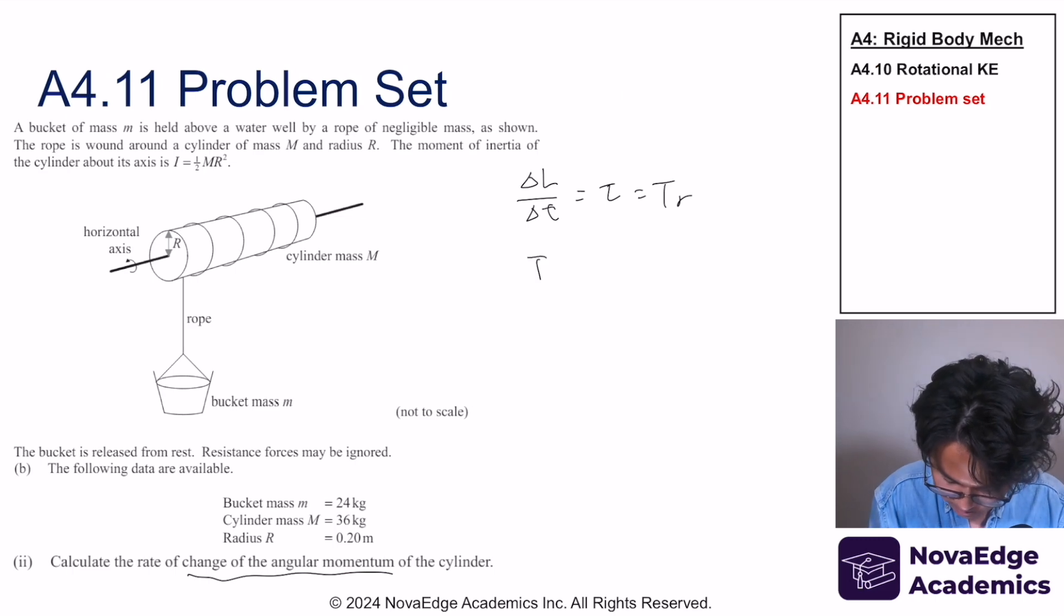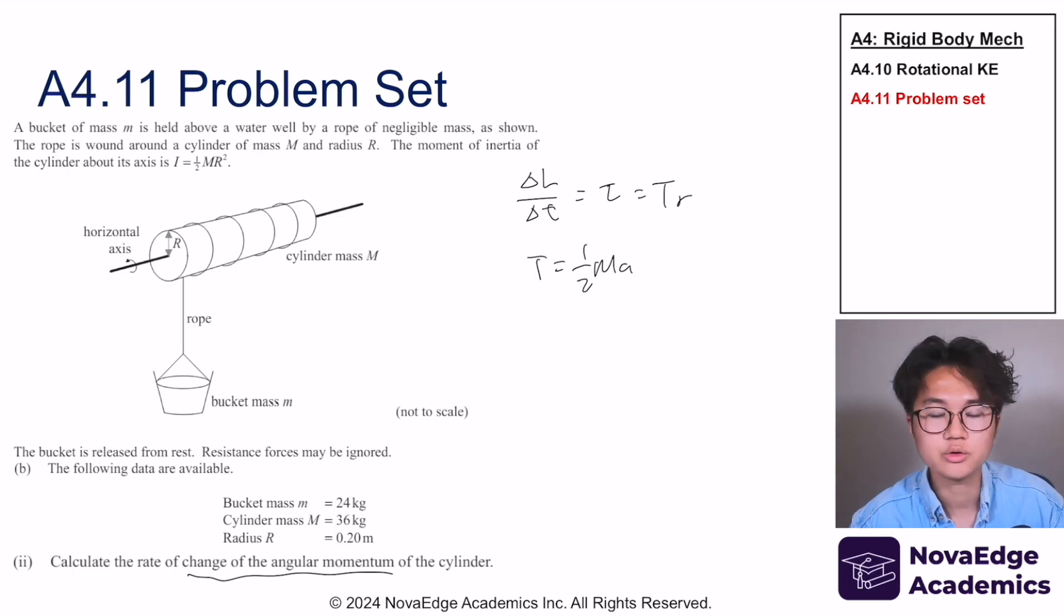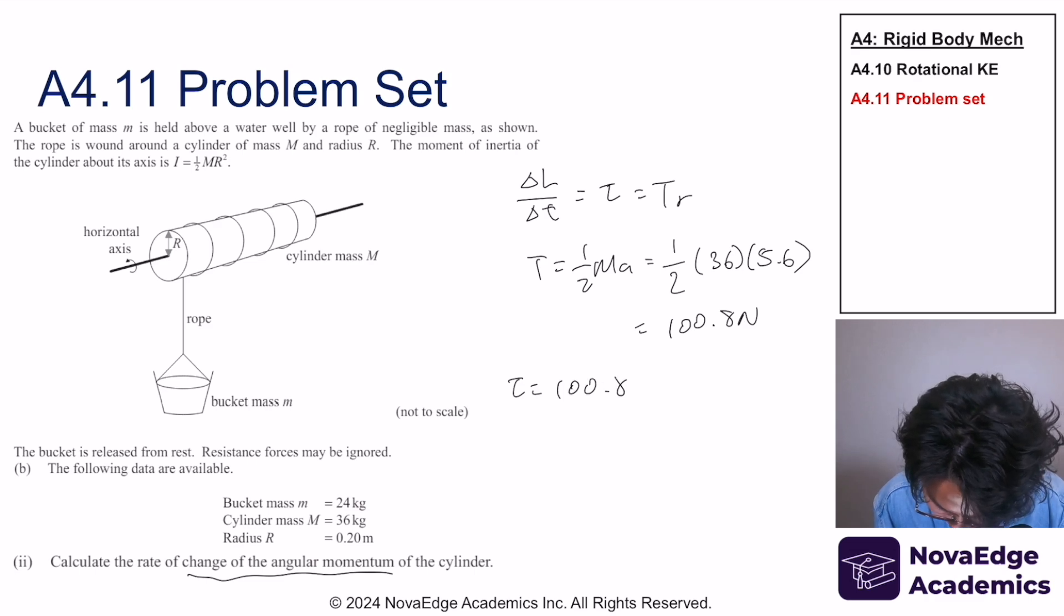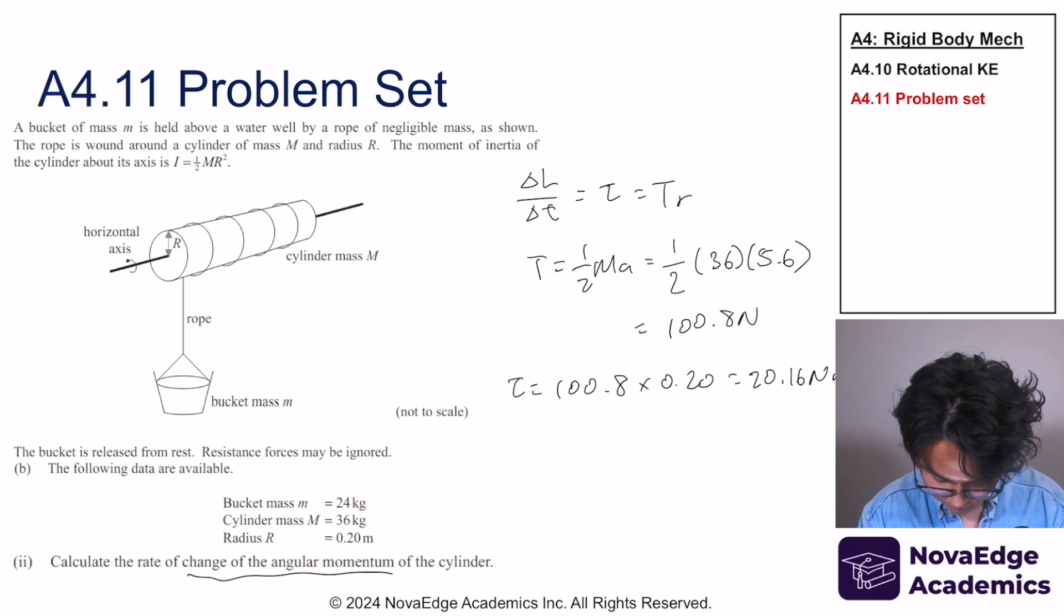Remember that t is equal to 1/2 ma. If you don't know this, then go back to part A, where we already derived that t is equal to 1/2 ma. A was 5.6. So torque is equal to 100.8 times the radius, which equals 20.16 newton meter, which is also the rate of change of angular momentum.